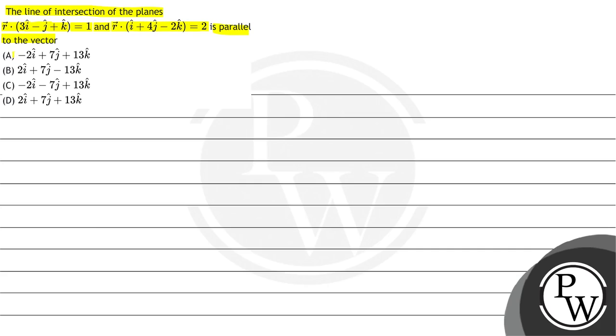Option A: -2i + 7j + 13k. Option B: 2i + 7j - 13k. Option C: -2i - 7j + 13k. And option D: 2i + 7j + 13k.